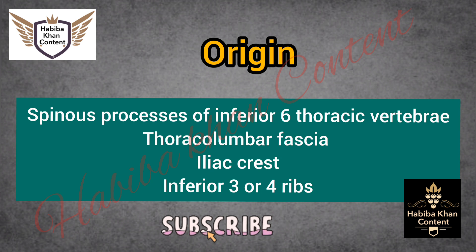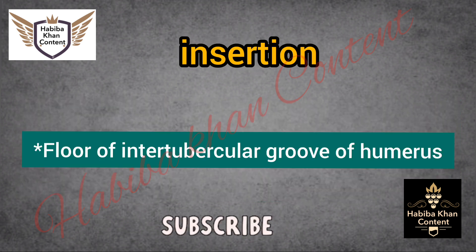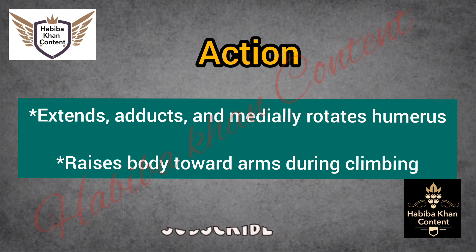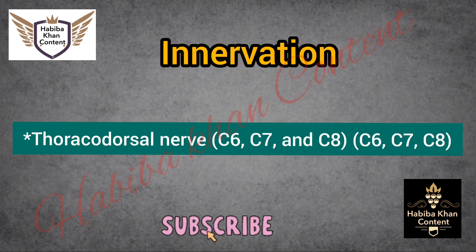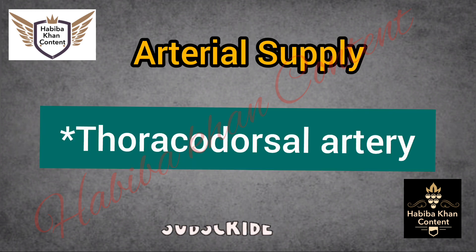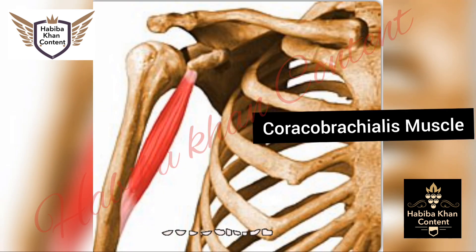Latissimus dorsi muscle. Origin: spinous processes of inferior six thoracic vertebrae, thoracolumbar fascia, iliac crest, inferior three or four ribs. Insertion: floor of intertubercular groove of humerus. Action: extends, adducts, and medially rotates humerus; raises body toward arms during climbing. Innervation: thoracodorsal nerve C6, C7, and C8. Arterial supply: thoracodorsal artery.